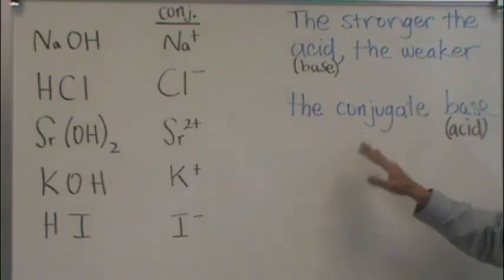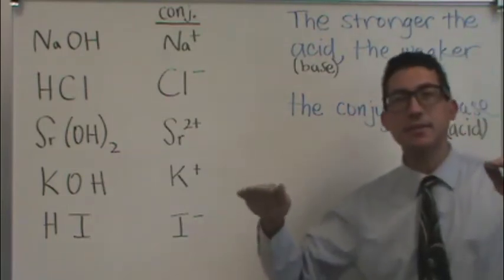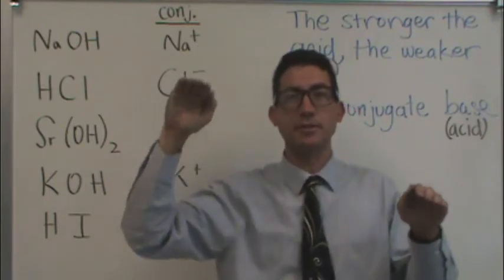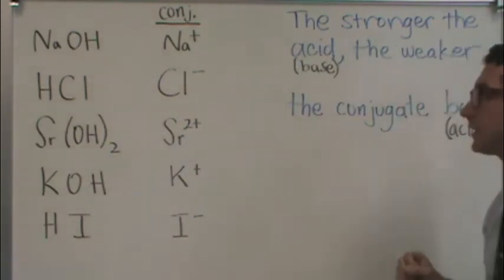You already learned that the stronger the acid, the weaker the conjugate base. The reverse is true. The stronger the base, the weaker the conjugate acid. This is kind of like a teeter-totter. As one gets stronger, the conjugate gets weaker. As the original one gets weaker, the conjugate gets stronger. Now, I want to take a look at a couple examples.